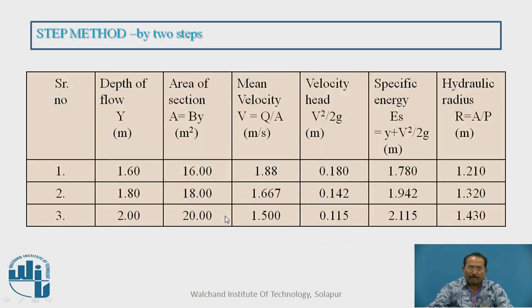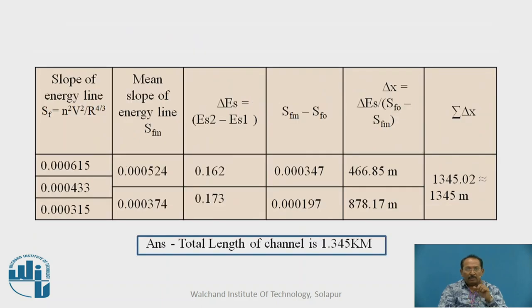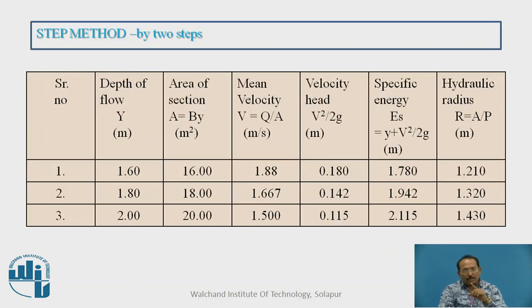Now particularly from my point of view, if we can solve this step method by making observation table clearly and putting the values in the appropriate column, we can get easily or it is a simple method I can say. Just see here, from serial number to depth of the flow, then area of the section, mean velocity, velocity head, specific energy, hydraulic radius, then slope, then mean slope, then delta ES, up to delta x, that is total length. If you can go through this observation table one by one, then it is very easy.